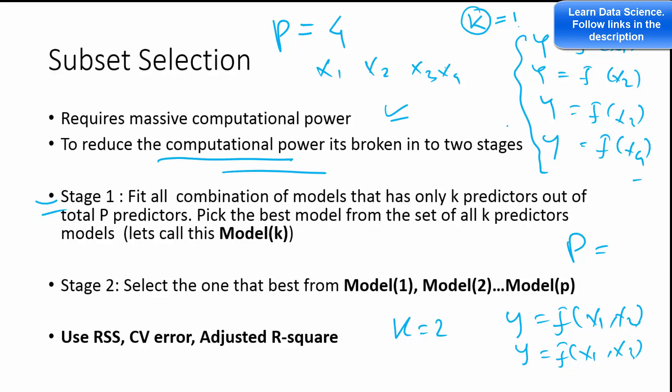And the second stage: out of whatever, whichever model has been selected from each case, like when k equals 1, let's say this model has been selected. When k equals 2, let's say the second model has been selected. And when k equals 3, you will have another model to be selected. When k equals 4, then you will have only one model.